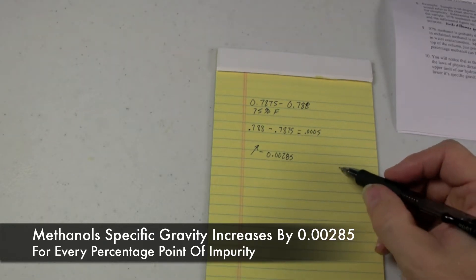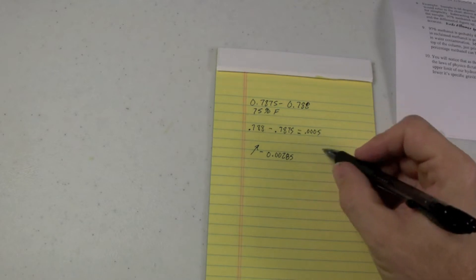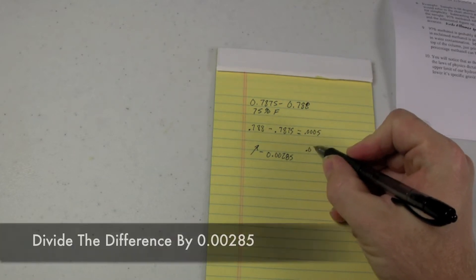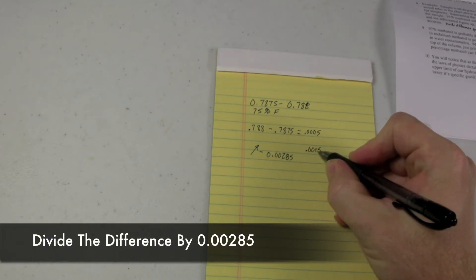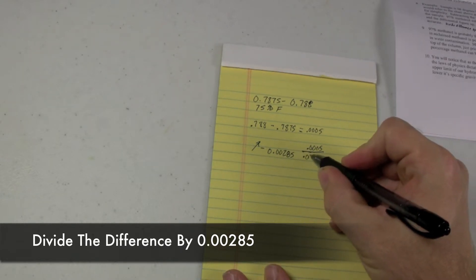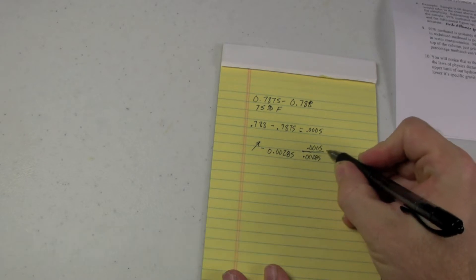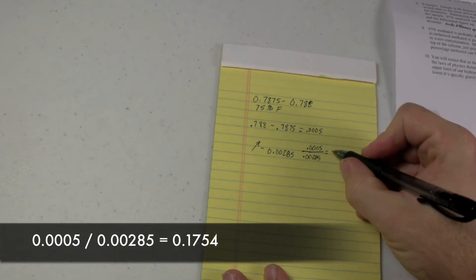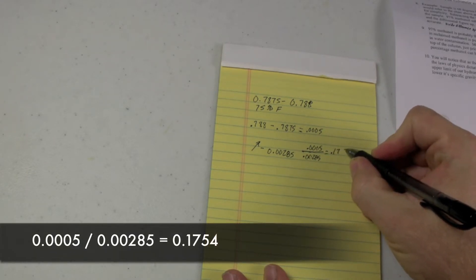So we take, to figure out the purity, we take .0005, which is our reading, and we divide it by .00285. That gives us .1754.